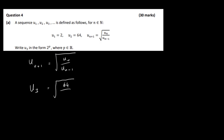We divide by u_(n-1). Since n+1 = 3, that means n-1 = 1, so u_(n-1) is u1, which is 2. So u3 = √(64 / 2) = √32.